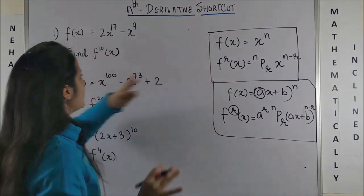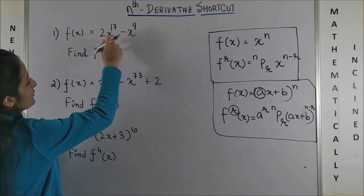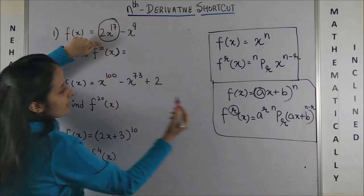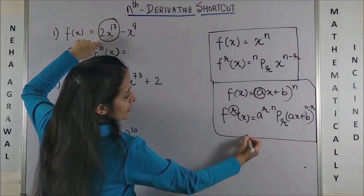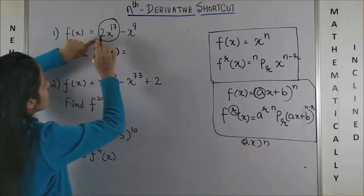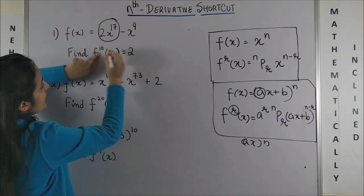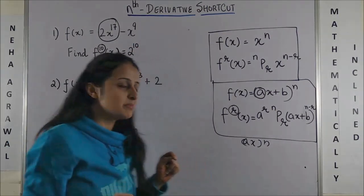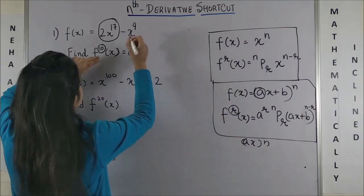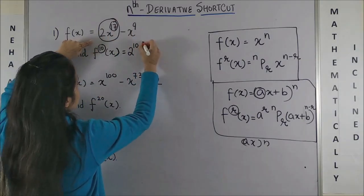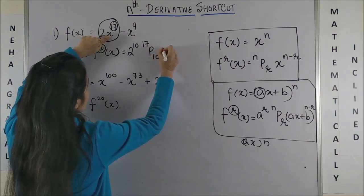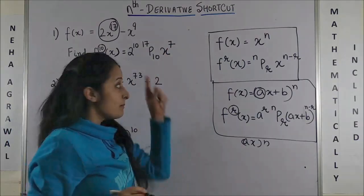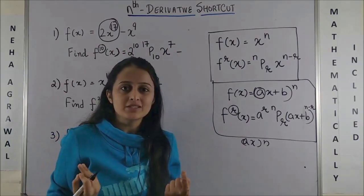So now if I apply these formulas, look at the first one. Since there is a constant attached to this one, it comes more in the category of ax raised to power n. It's simple - whatever is the constant raised to the exact same power for which the derivative has been asked. Next, it is nPr where n is this number, so 17P10 into x raised to power n minus r, which is 7 minus -